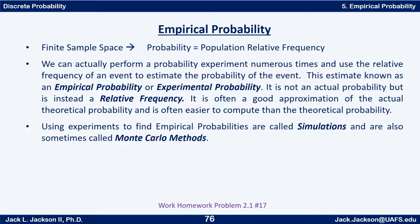Empirical probability is often a good approximation of the actual theoretical probability and is often easier to compute. Using experiments to find empirical probabilities is sometimes called simulations, and these are also sometimes called Monte Carlo methods, named after a place in Europe where a lot of gambling occurs.